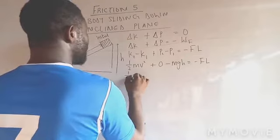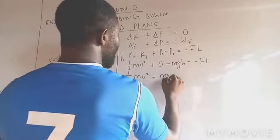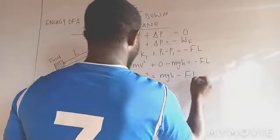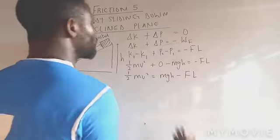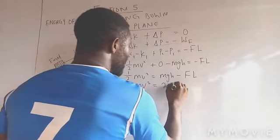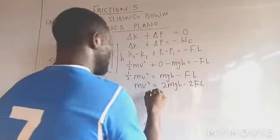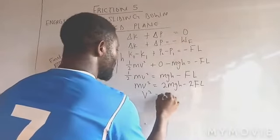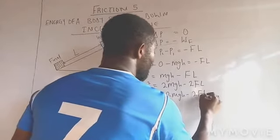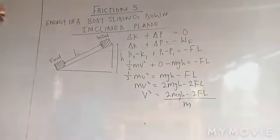So I have half MV squared is equal to MGH minus FL. If I multiply through by 2 I have MV squared equals 2MGH minus 2FL. And that will give me V squared to be 2MGH minus 2FL over M.